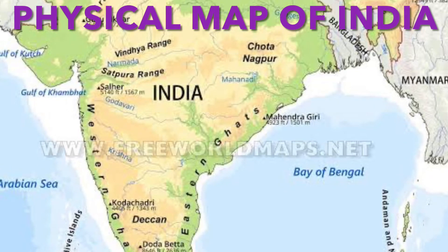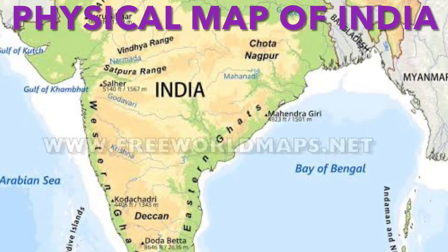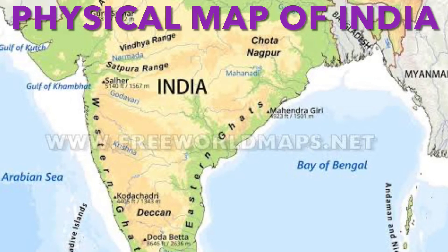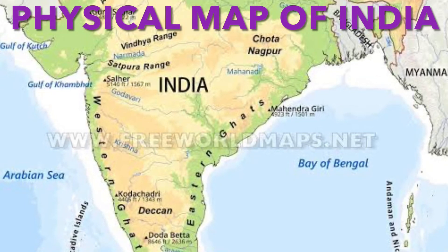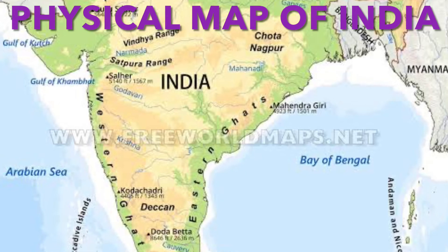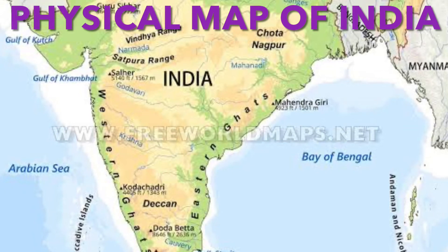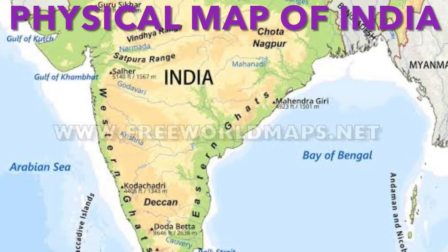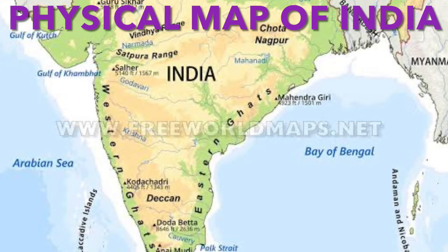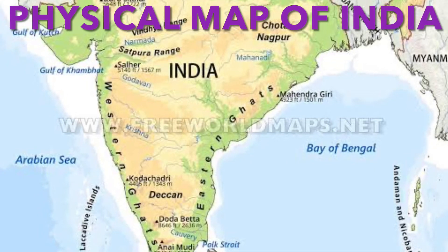Cultural maps show man-made features. Political maps show the administrative divisions of a country, state or district. Population maps show the distribution, density and growth of population, occupation, structure and literacy. Economic maps show production and distribution of different types of crops and minerals. Transportation maps show roads, railway lines, locations of railway stations, airports and seaports.